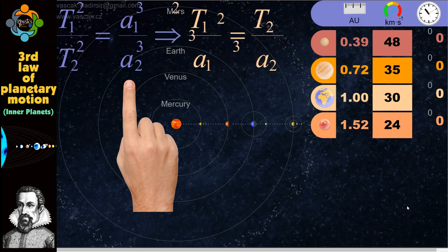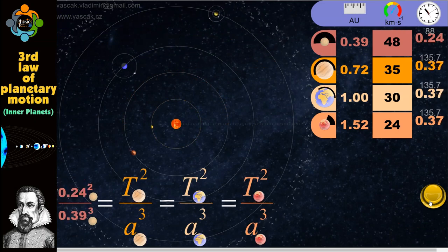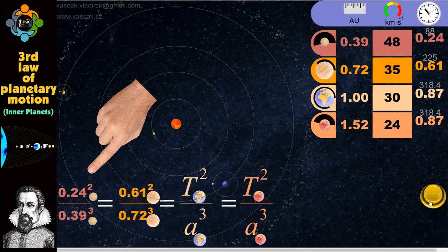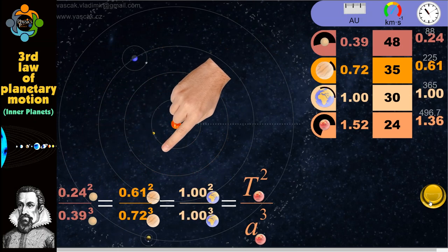distance from the Sun. In simpler terms, this means that the farther a planet is from the Sun, the longer it takes to complete its orbit. This relationship holds true for all the inner planets of our solar system: Mercury,